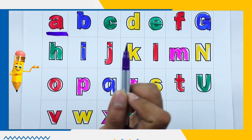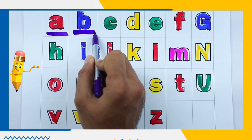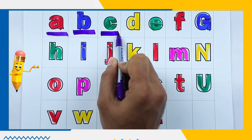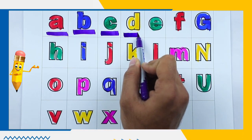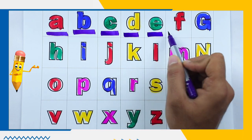A. A for apple. B. B for ball. C. C for cat. D. D for dog. E. E for elephant.